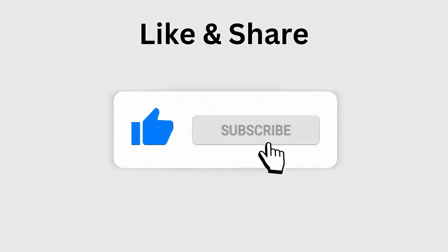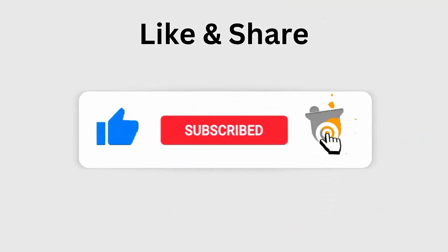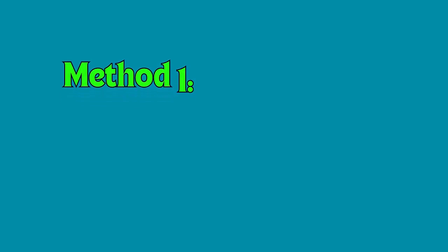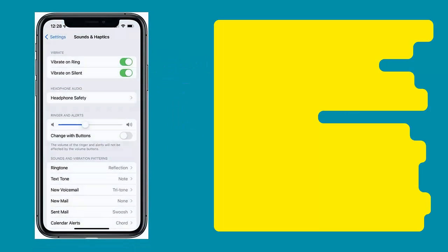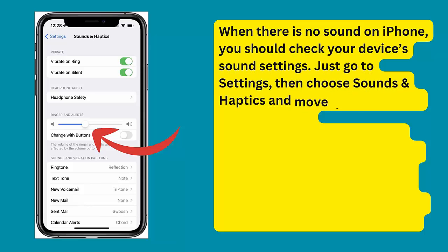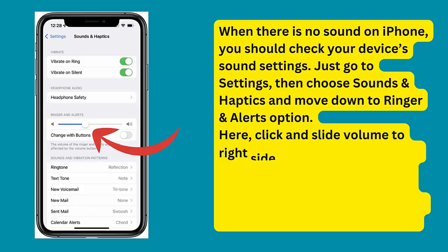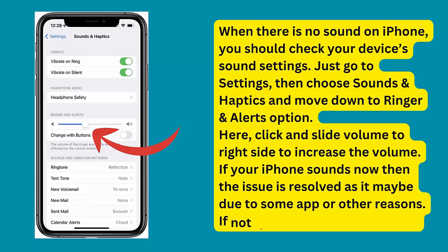Method 1: Test phone speaker and audio devices. When there is no sound on iPhone, check your device's sound settings. Go to Settings, then choose Sounds and Haptics, and move down to Ringer and Alerts. Click and slide the volume to the right side to increase it. If your iPhone sounds now, the issue is resolved.